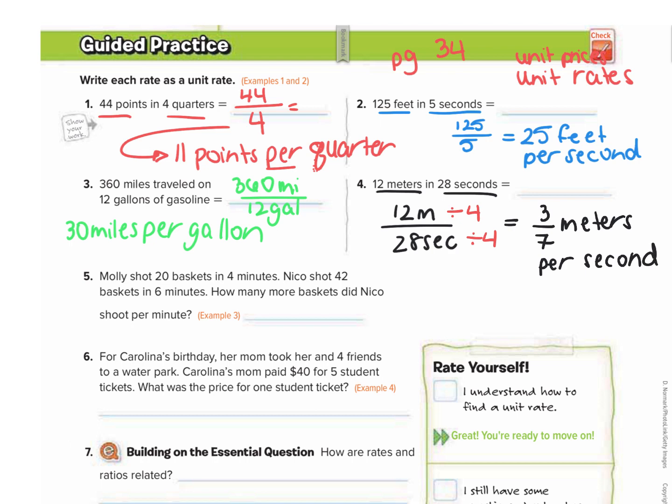Number five, Molly shot 20 baskets in four minutes. Nico shot 42 baskets in six minutes. How many more baskets did Nico shoot per minute? So let's find each person's unit rate. So Molly shot 20 baskets in four minutes, which is five baskets per minute.